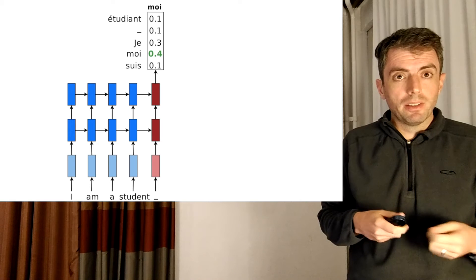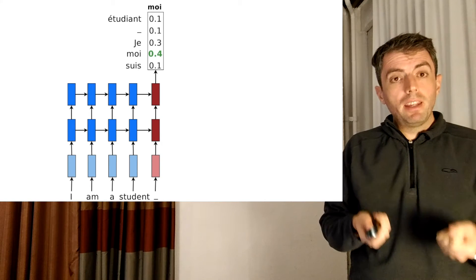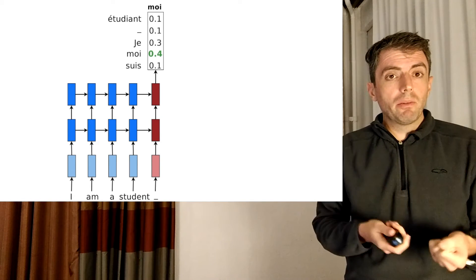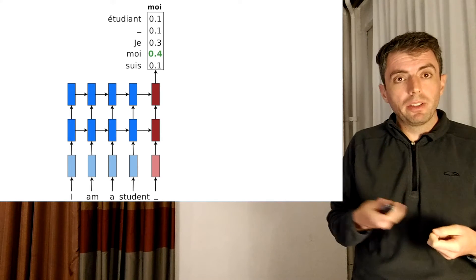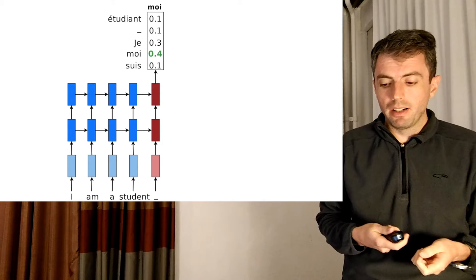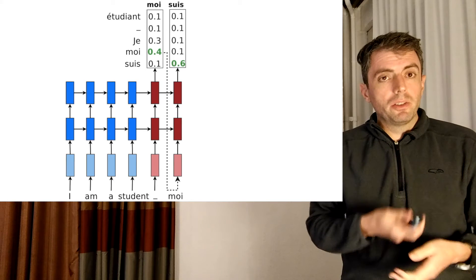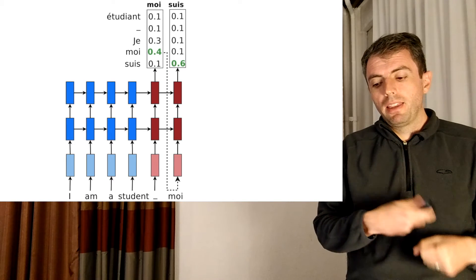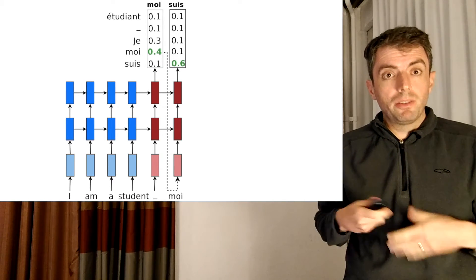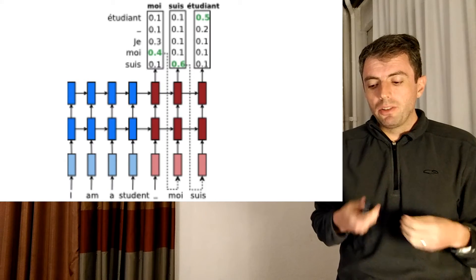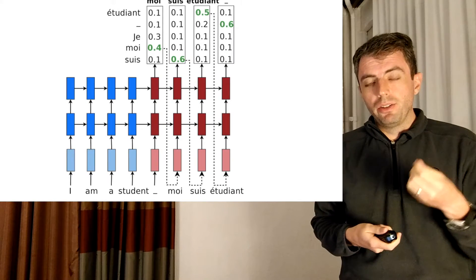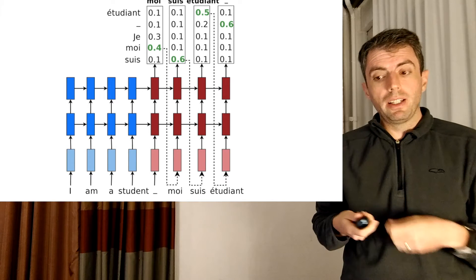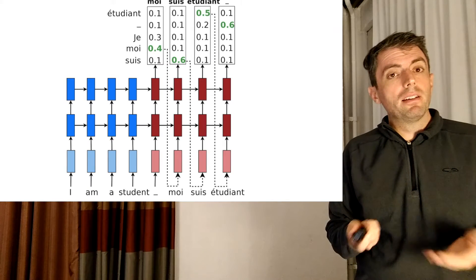And then you're going to take that word moi, and that's going to be the input to the next time step in your RNN. So then you generate the next word. That becomes the input to the next stage of the decoder. And you keep doing that until you, in your decoder, generate the boundary marker, and then you're done.